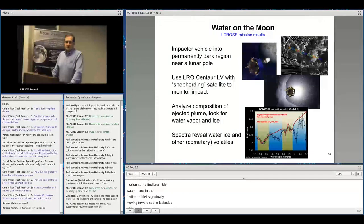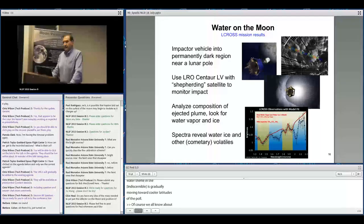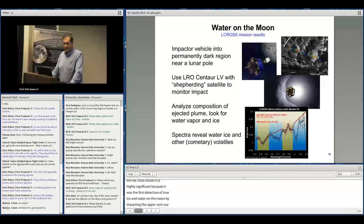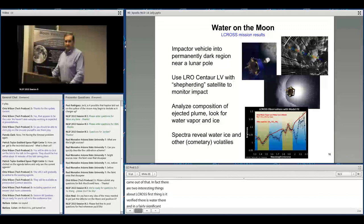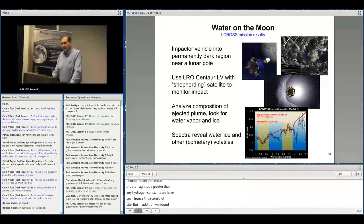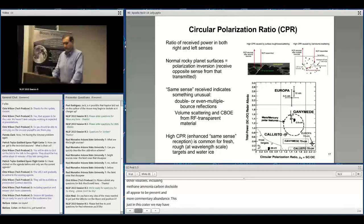The LCROSS results were a single point measurement but highly significant—first direct detection of true ice and water on the Moon. By impacting the Centaur stage into Cabeus crater and watching the plume, they verified water ice is there in significant amounts, between 5 and 10 weight percent, orders of magnitude greater than any hydrogen at equatorial sites. They also found other volatiles like methane, ammonia, carbon dioxide in more or less cometary abundance, suggesting a primarily cometary source.